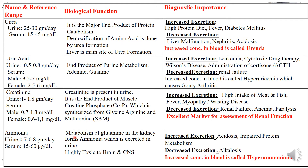Ammonia present in urine comes from the metabolism of amino acid glutamine. In the kidneys, glutamine is metabolized to release ammonia, which is excreted along with urine. Ammonia is highly toxic to the brain and central nervous system, so it cannot stay in circulation for very long. The body converts the major part of ammonia into urea. The increased excretion of ammonia is seen in acidosis and impaired protein metabolism, and decreased excretion is seen in alkalosis.